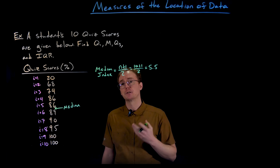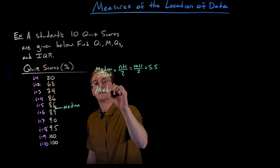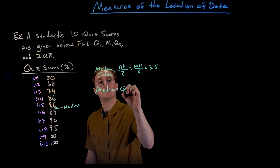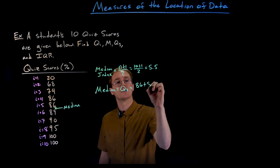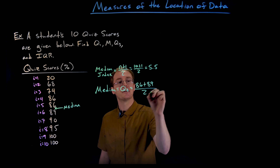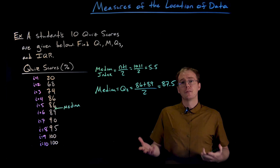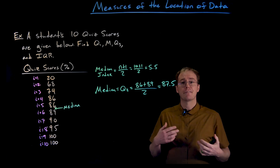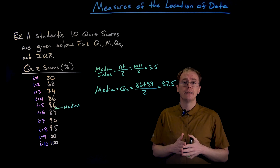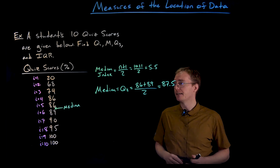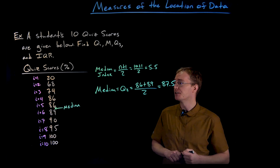When the index is 5.5, we interpret that as taking the average between the fifth and sixth data values. So the median Q2 is equal to the average between 86 and 89. Adding them and dividing by two gives us 87.5. Remember, the median and quartiles don't necessarily have to be values within our data set — they are numbers dividing the data set into separate pieces. We know half the data values are below this number and the other half are above.